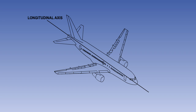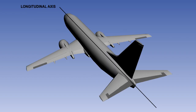In this lesson, we will discuss the various ways in which lateral control about the longitudinal axis of the aircraft is achieved. The aircraft rolls about its longitudinal axis. Lateral control about this axis is primarily achieved by ailerons.